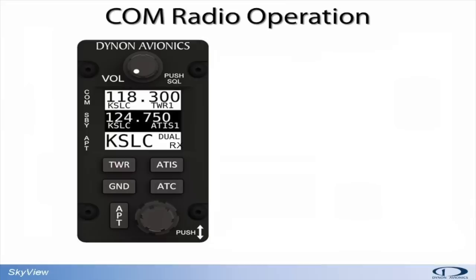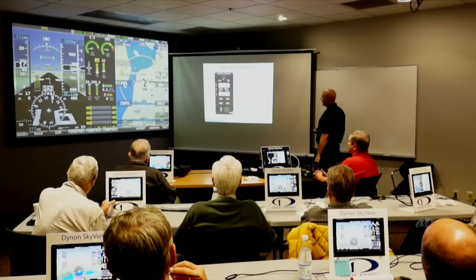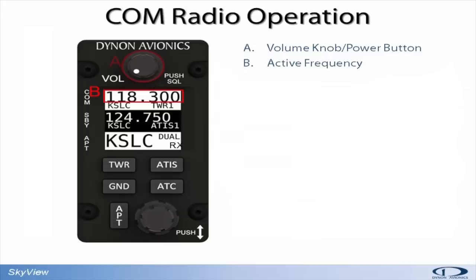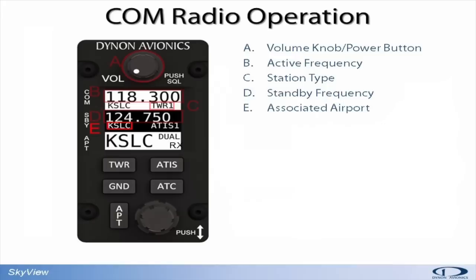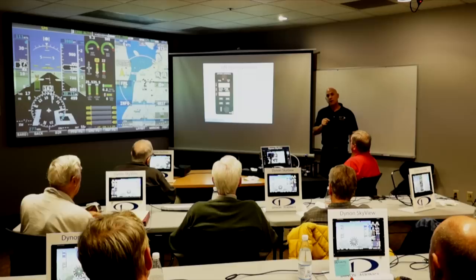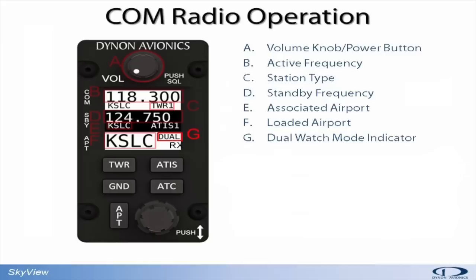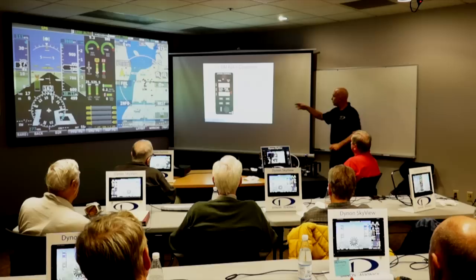This is a picture of the control module from the Dynon COM radio. There's a volume knob, the active frequency, and the nature of the frequencies — tower, ground, ATIS, and so on. Then there's a standby frequency. You can identify an airport that you want the COM radio to focus in on. It also has the dual watch or monitor-standby frequency capability — if you enable dual watch mode, you can listen to ATIS on your standby, but any transmission on the active frequency takes precedent.